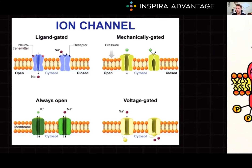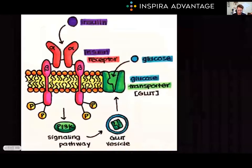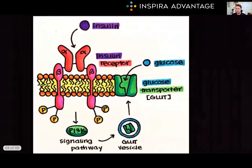Then we have ligand-gated channels. These open only in the presence of specific binding substances, often a hormone or neurotransmitter. Voltage-gated channels are typically most relevant in muscles or neurons. Next up are enzyme-linked receptors. These receptors participate in cell signaling by binding to extracellular ligands, triggering the initiation of secondary messenger cascades.